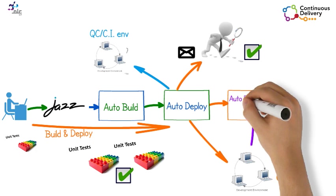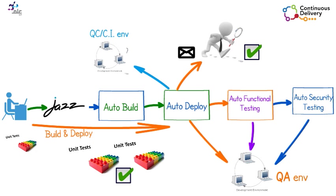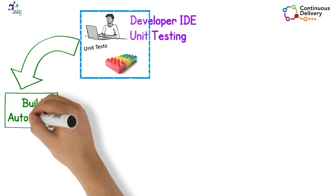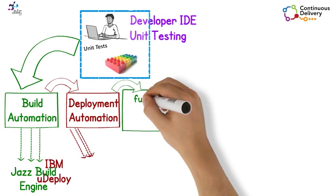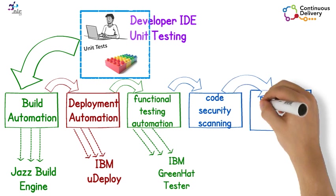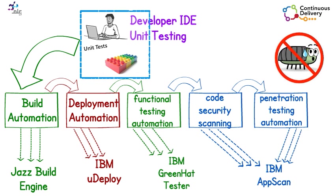Moreover, IBM Green Hat functional testing can be triggered automatically as part of the cycle. Security scanning and penetration testing can also be done automatically with IBM AppScan. This complete automated delivery cycle — from unit testing, build automation, deployment automation, functional testing automation, code security scanning, and penetration testing automation — will dramatically decrease the bug leakage rate and boost Elm's delivery quality.